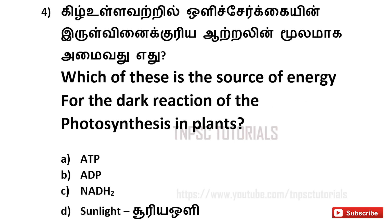Fourth one: Which of these is the source of energy for the dark reaction of photosynthesis in plants? A. ATP, B. ADP, C. NADH2, D. sunlight. And the answer is A. ATP.